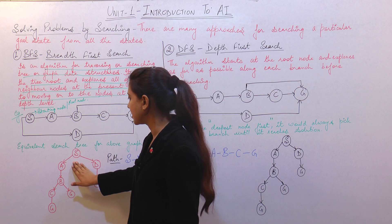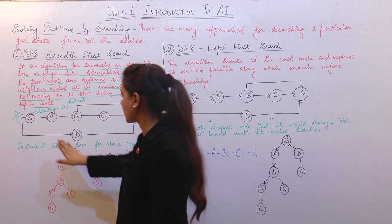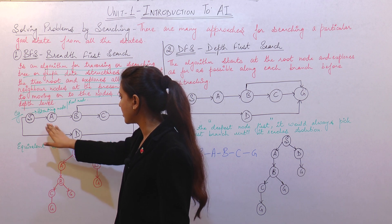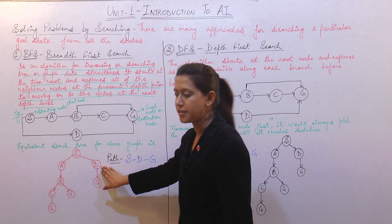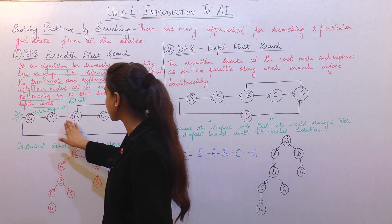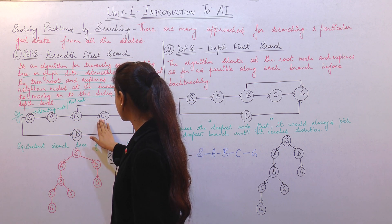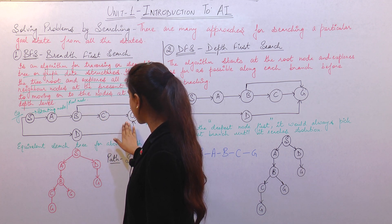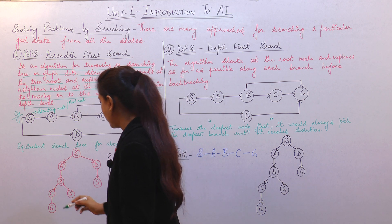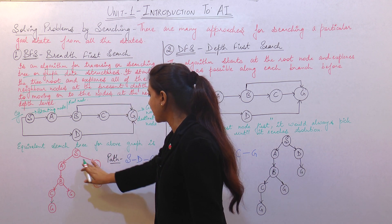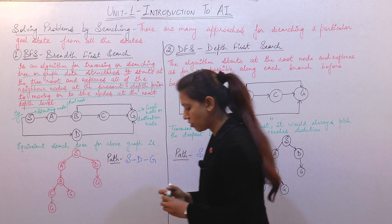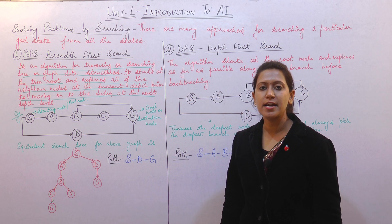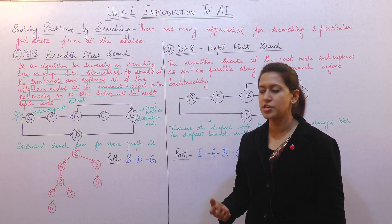We have taken S as the root node. S is connected to A, so A forms the left subtree of S, and S is also connected to D, so D forms the right subtree. Then A is connected to B, B is connected to C and G, and C is directly connected to G. D is also connected to G. We have now constructed an equivalent search tree to implement the BFS searching technique.